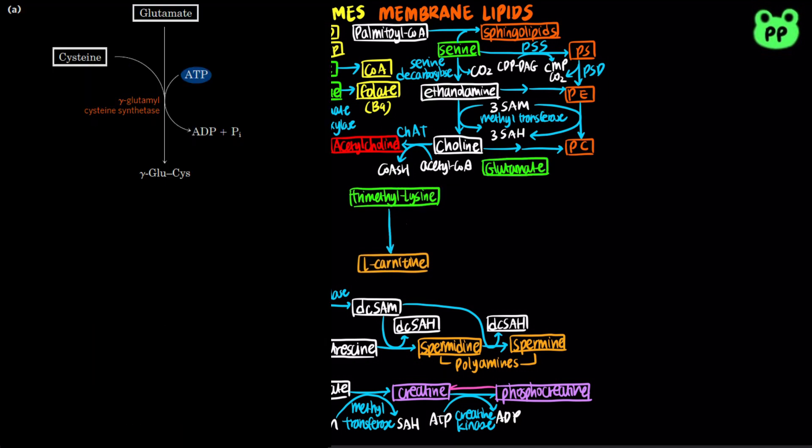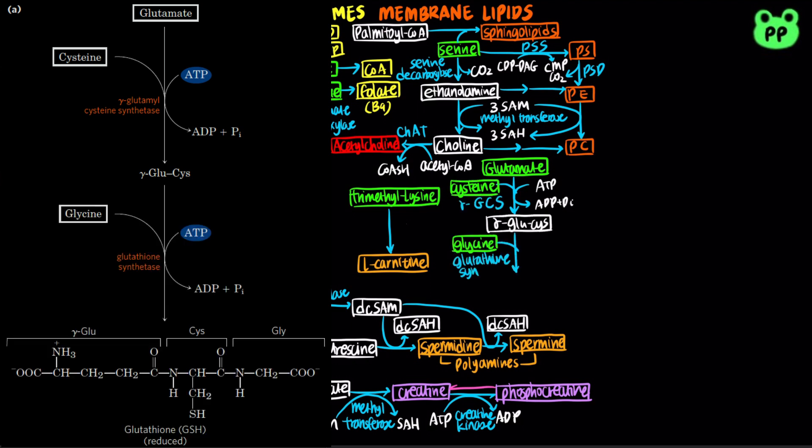First, gamma-glutamyl cysteine synthase condenses glutamate with cysteine to form a dipeptide, which condenses with glycine to form reduced glutathione. Both condensation reactions require the hydrolysis of ATP to ADP and inorganic phosphate.